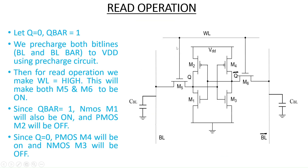Let us look at the read operation. Suppose Q equals 0 and Q bar equals 1 — we want to read these stored values. The cross-coupled inverter stores Q and Q bar. To read, we first pre-charge both bit lines BL and BL bar to high voltage VDD using the pre-charge circuit. Then the pre-charge circuit is turned off and both bit lines are left floating. For the read operation we then make WL, the word line, equal to high.